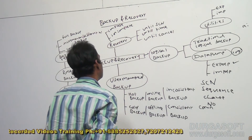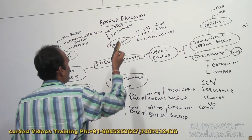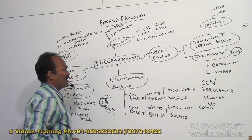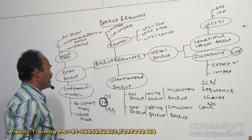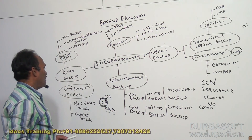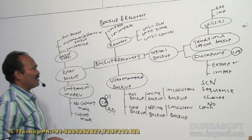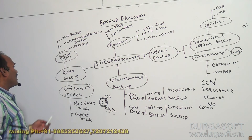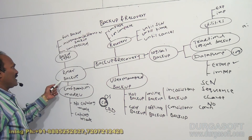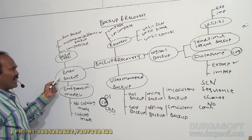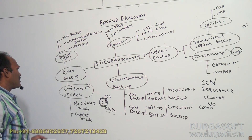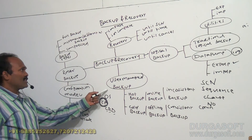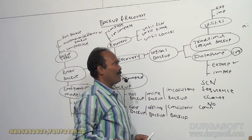Regarding what is 'until SCN', 'until time', and 'until cancel' — at the time of the recovery process, each of these will be explained. Out of these backup methodologies, RMAN backup is the very latest and most powerful, when compared to user-managed backup and logical backup.